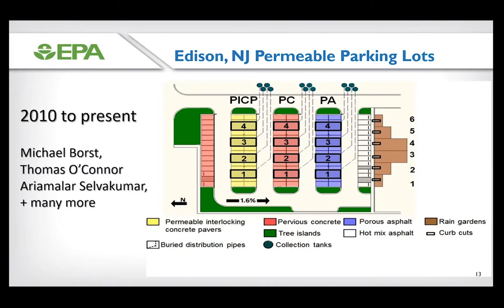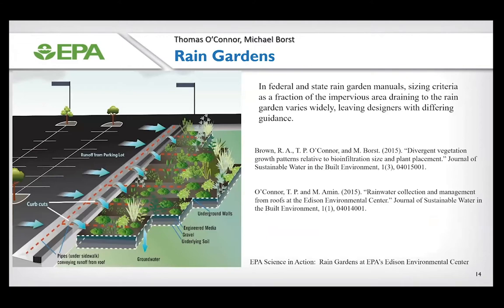In Edison, New Jersey, there's a one-acre site built with a permeable parking lot. Michael Borst, Tom O'Connor, and many postdocs have worked on this site since construction was completed in 2009. They have developed a very comprehensive set of infiltration and water quality data. The site features porous concrete, permeable interlocking concrete pavers (PICP), and porous asphalt. They also built six different rain gardens of various sizes with flow coming laterally into the rain garden as well as runoff from the building roof.